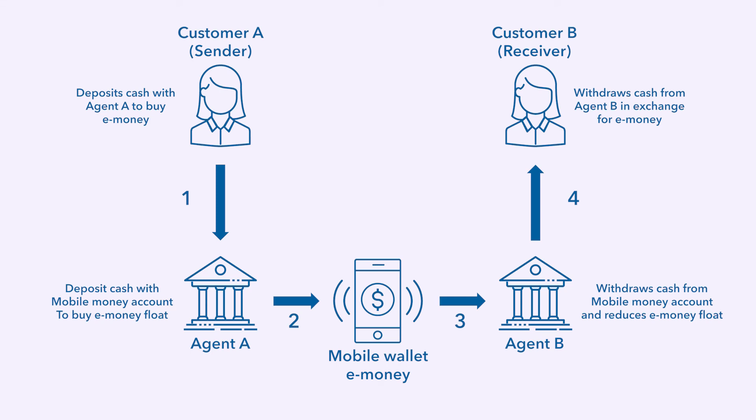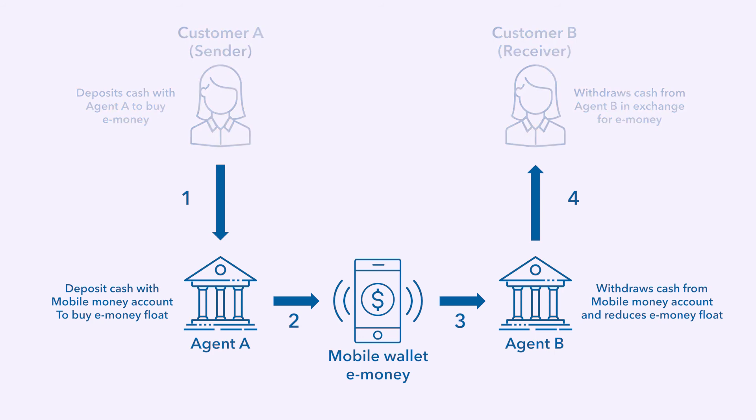Variations on this basic transaction mainly deal with the elements in between person A and person B once they have an e-money account of some type. The regulatory structure and the types of operators of mobile banking systems determine how these elements are constructed and what risks may be associated with them.